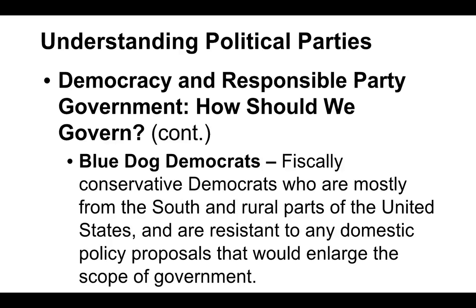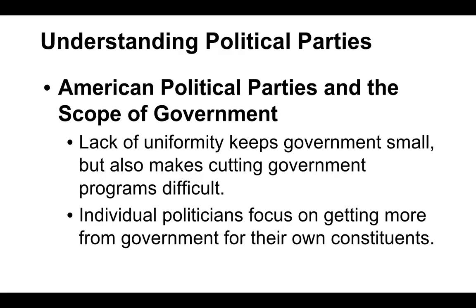American political parties in the scope of government: a lack of uniformity keeps government small but also makes cutting government programs difficult. The idea is that once something gets in place, it's hard to cut. Individual politicians focus on getting more from government for their own constituents — it's about bringing home the bacon to your district. This is how people get elected. When given the choice to keep their job or do something for the country at large, they're going to do what they can to keep their job.